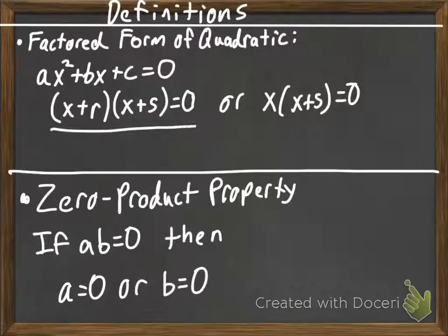It can be x plus r times x plus s equals 0, where r and s are just numbers. Or it can be x times x plus s equals 0. There's multiple ways that we can see it written.